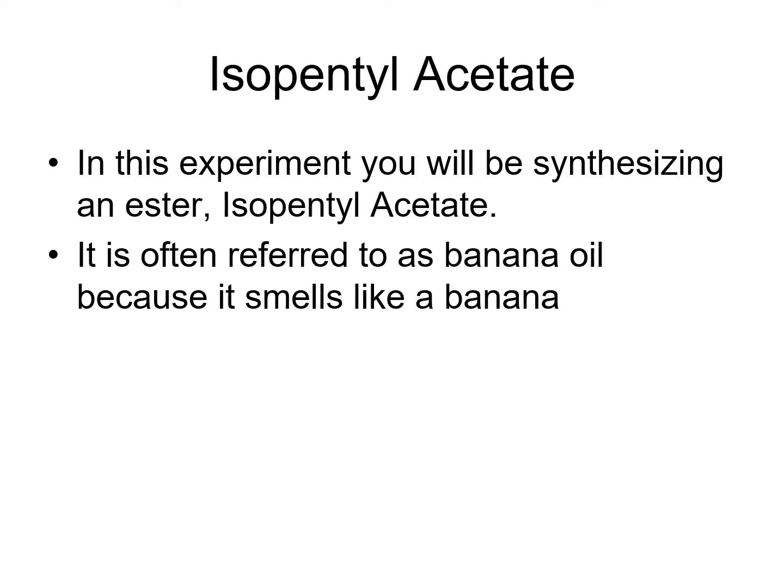In this experiment we're going to be synthesizing isopentyl acetate. The technique is called Fisher esterification — a specific way to create an ester using an acid catalyst. Isopentyl acetate is an ester, so you have a carbonyl carbon double bond next to a carbon-oxygen single bond attached to the same carbon. Esters generally have very strong smells — the smells you get from fruits, sugars, syrups. In this case, isopentyl acetate is also called banana oil because it's the main chemical that gives bananas their smell.